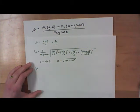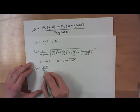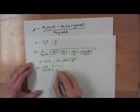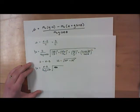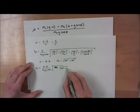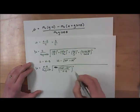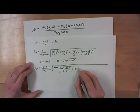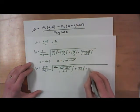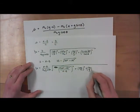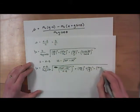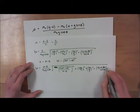Taking these two things and nesting them back inside the expression: the uncertainty of the coefficient of kinetic friction becomes A minus B over M_B G cosine theta, square root of: the uncertainty of A squared plus the uncertainty of B squared, all over A minus B — that whole thing squared — plus the fractional uncertainty of M_B squared, plus the fractional uncertainty of G squared, plus the uncertainty of cosine theta over cosine theta, all squared.